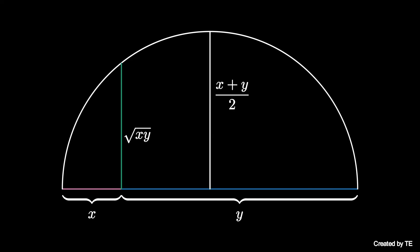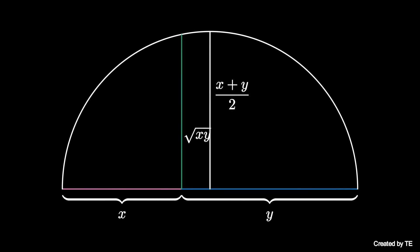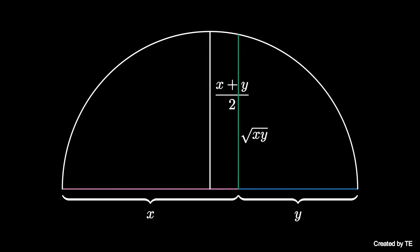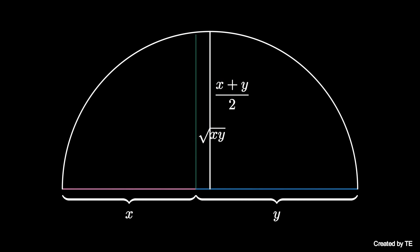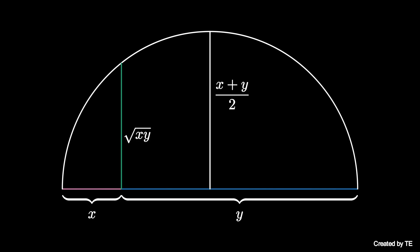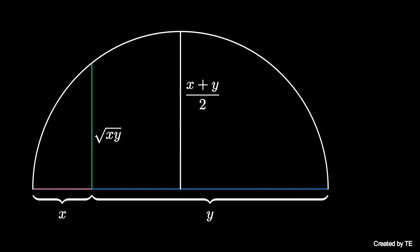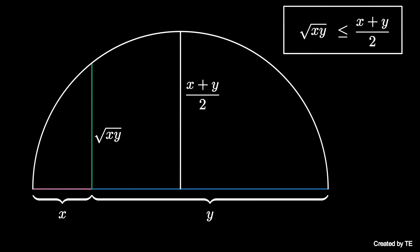No matter the lengths of x and y, the chord length z is always less than or equal to the radius of the semicircle by construction. Therefore, the square root of x times y is less than or equal to (x plus y) over 2, with equality if and only if x equals y. This is the arithmetic mean geometric mean inequality.